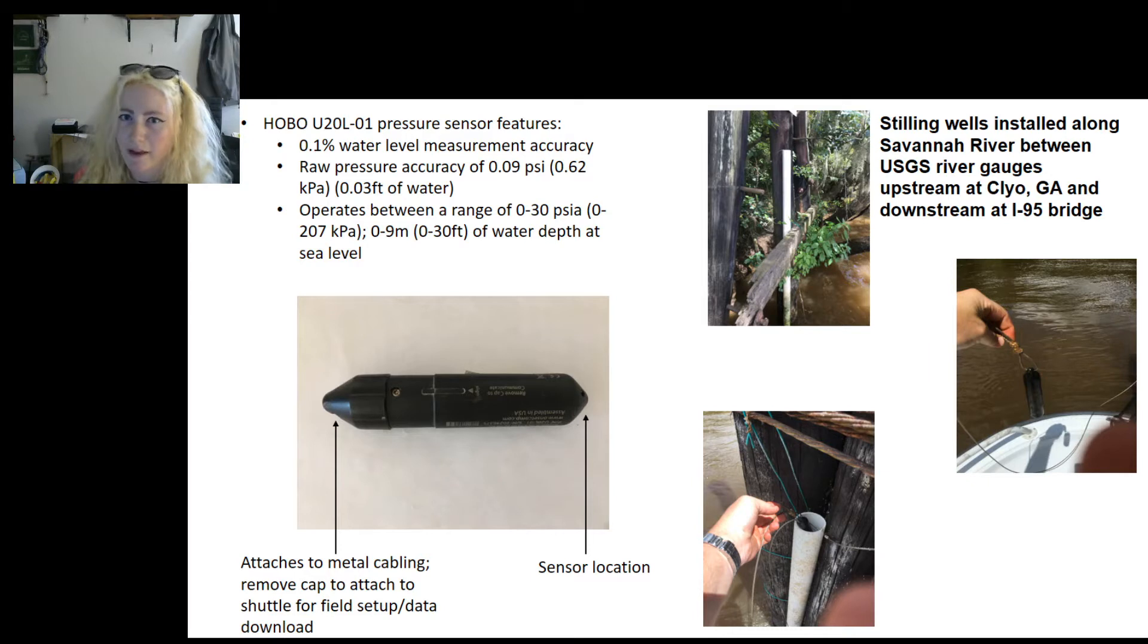How do we define the head of tide? HOBA pressure sensors collect absolute pressure that is later converted to water levels. These sensors have been deployed on the Savannah, Ogeechee, and Altamaha rivers so far. The sensors feature a 0.1% water level measurement accuracy, a raw pressure accuracy of 0.09 psi, and operate between a range of 0 to 9 meters of water.